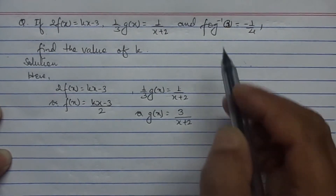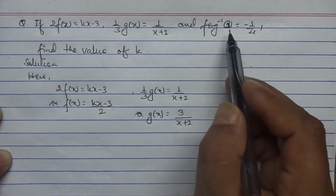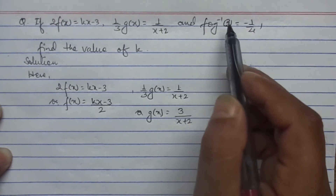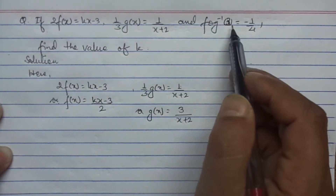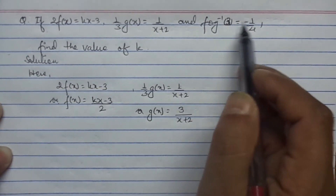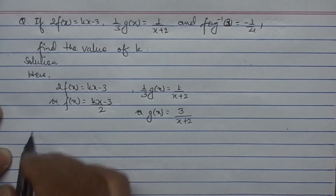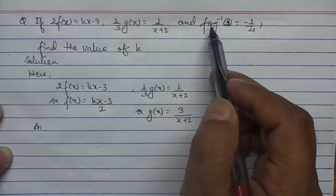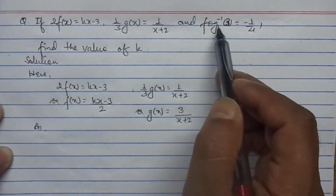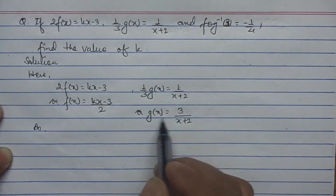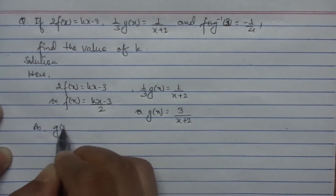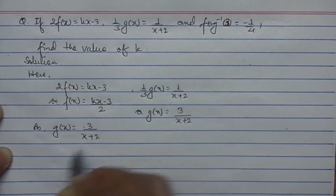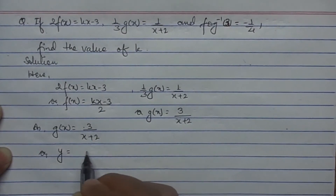As given in the question, fog⁻¹(3) equals minus 1 upon 4. It means we first need to find fog⁻¹(x) and then input the value x equals 3 in order to get the value of k. Since the composite function is fog⁻¹(3), we first need to find g⁻¹(x). As g(x) equals 3 divided by x plus 2, we replace g(x) with y.